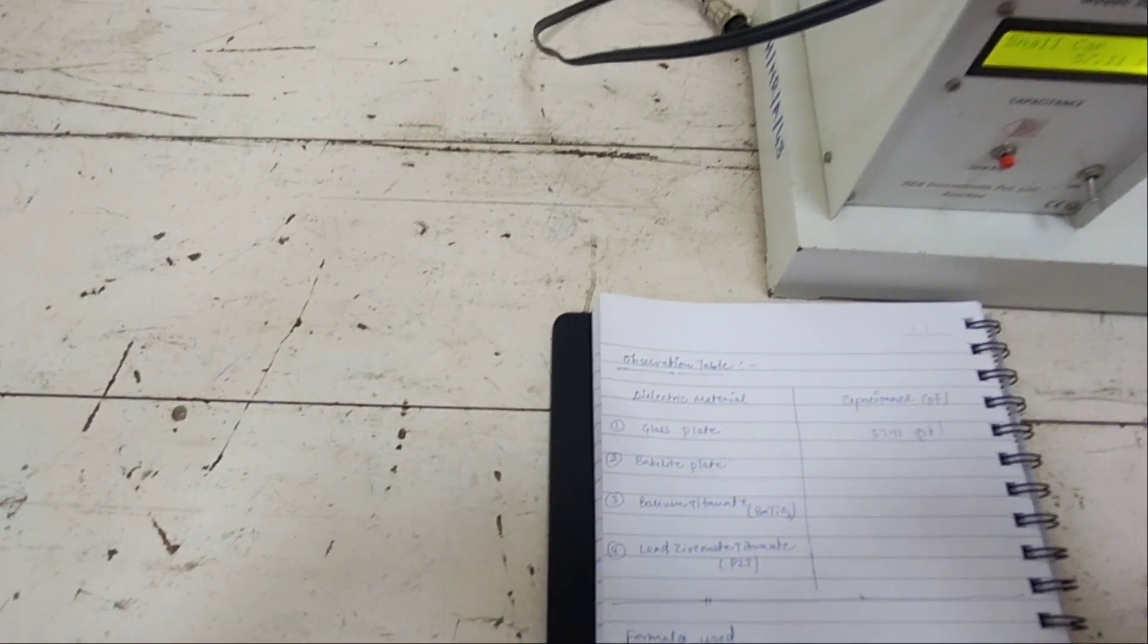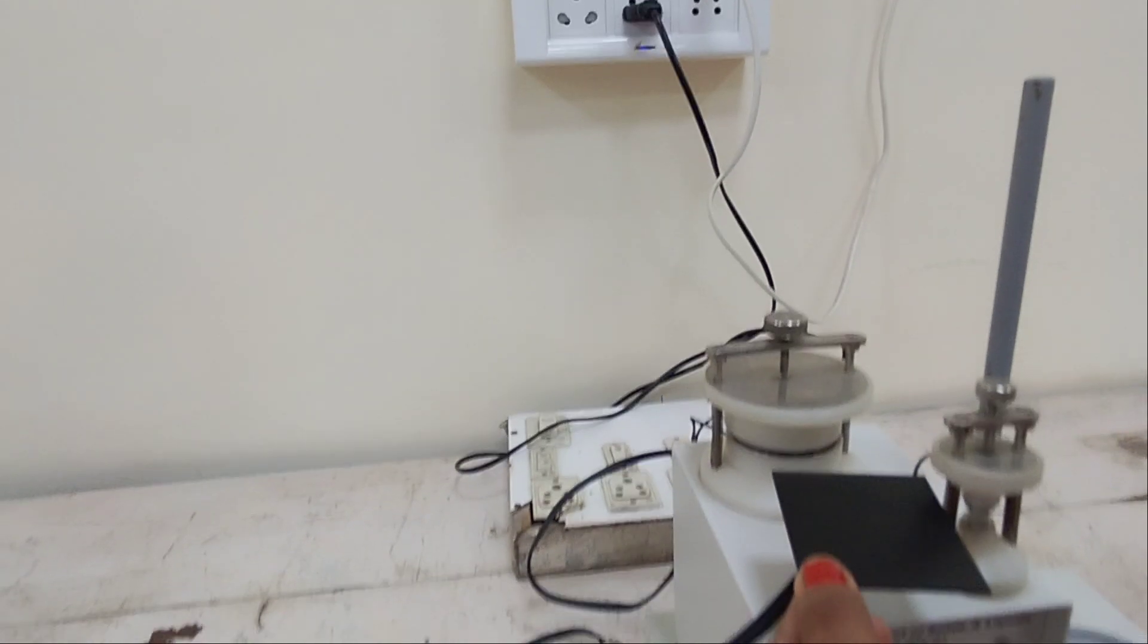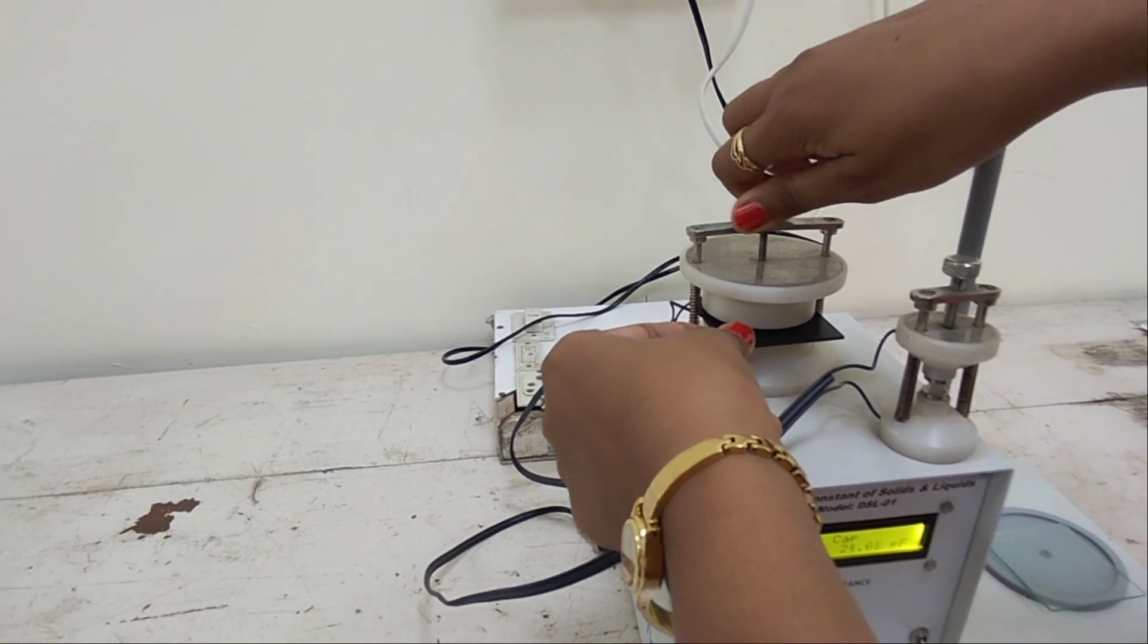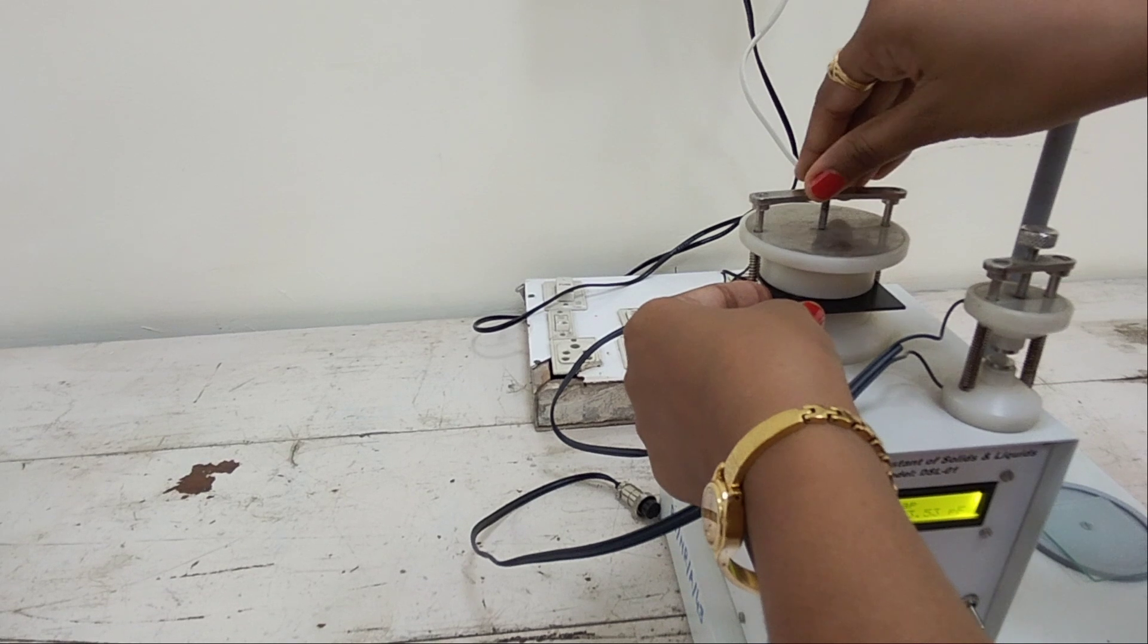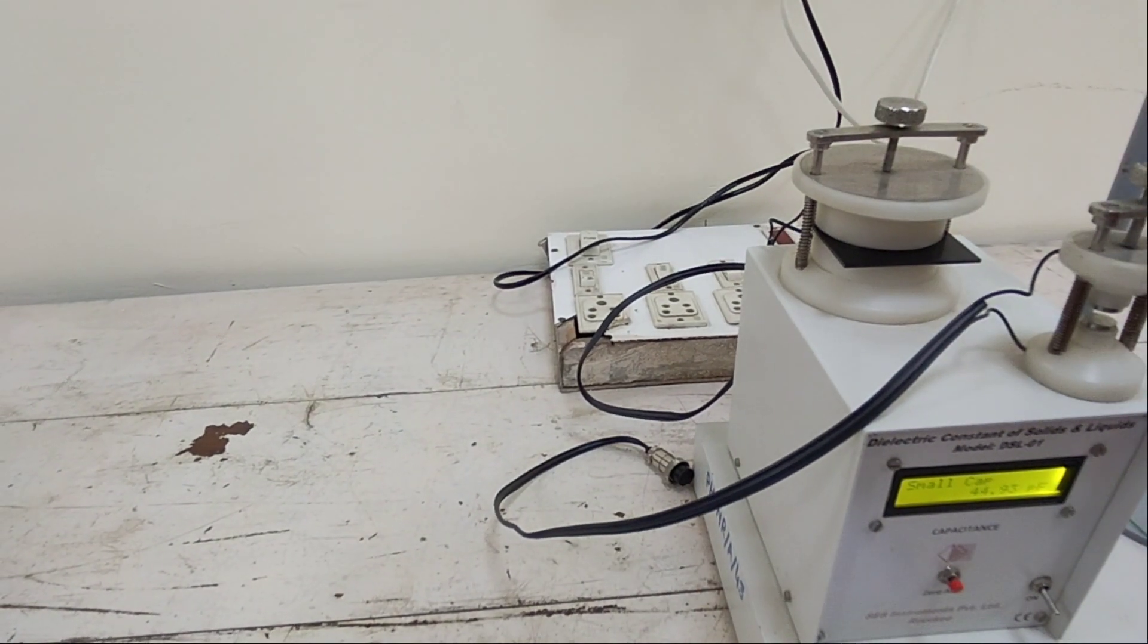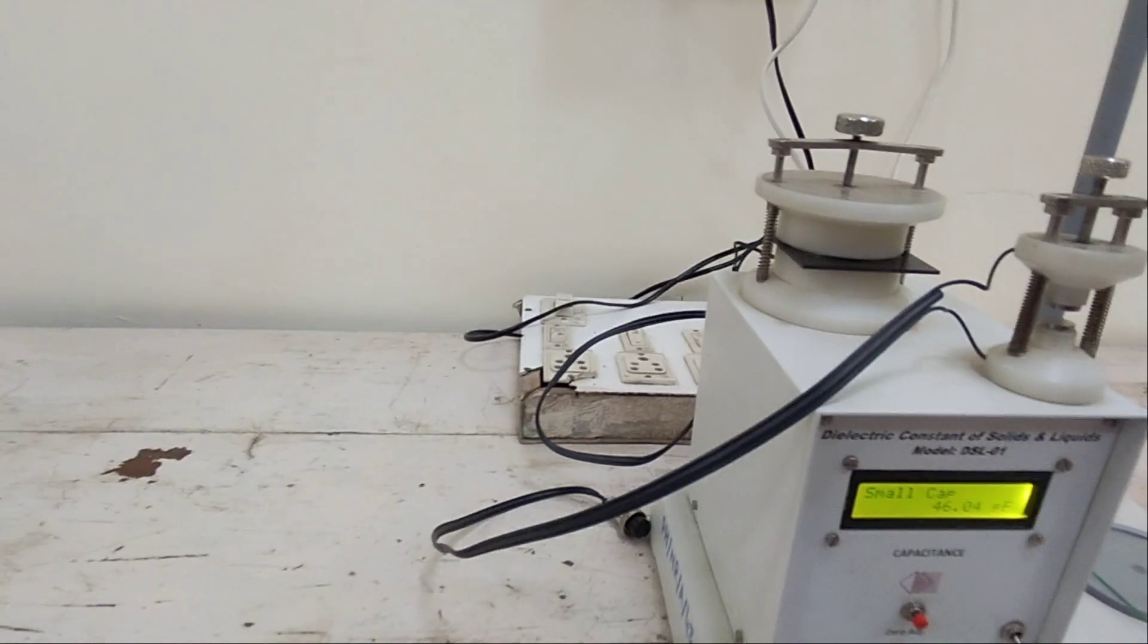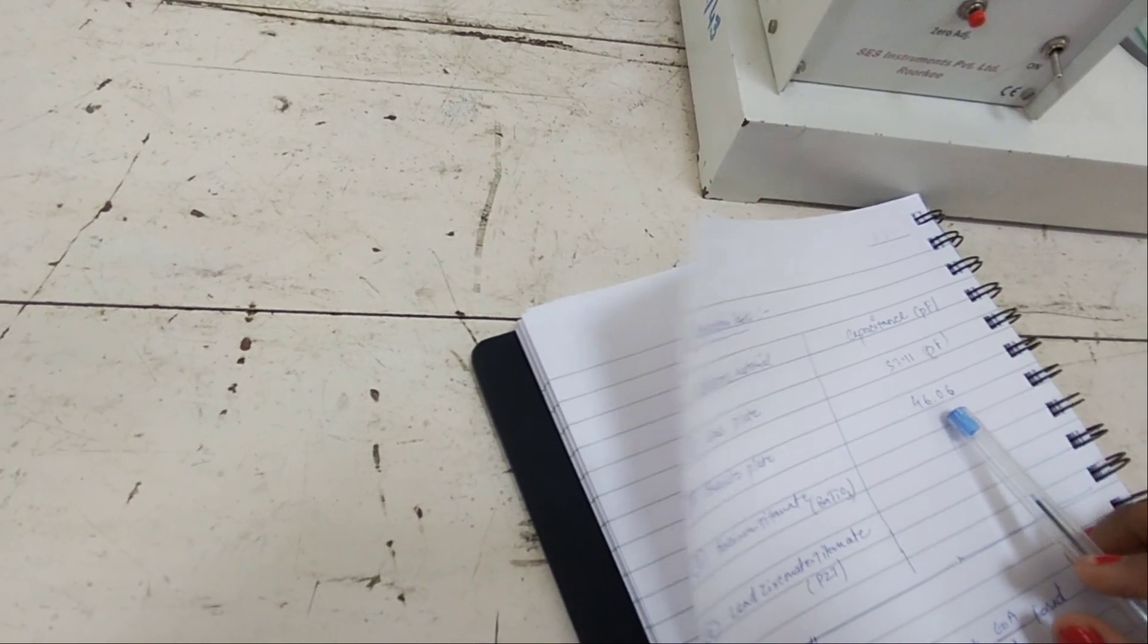Now next we have to change our sample and put bakelite plate and take measurements. From this knob we can put it outside, then insert it, then again tighten the knob and adjust your knob so that it touches the surface of both capacitors. Don't get it tight, only slightly so it touches the surface. You can see the reading is coming 46.06. For bakelite plate this is 46.06.